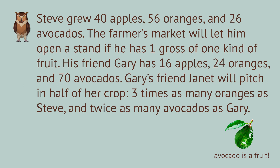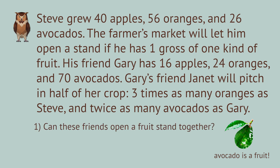Steve's friend Gary also grows fruit. He grew 16 apples, 24 oranges, and 70 avocados. Gary's friend Janet agrees to sell half of her crop. She grew three times as many oranges as Steve, and twice as many avocados as Gary. She ate all her apples. Can Steve, Gary, and Janet open a fruit stand together at the farmer's market? And what will they sell?